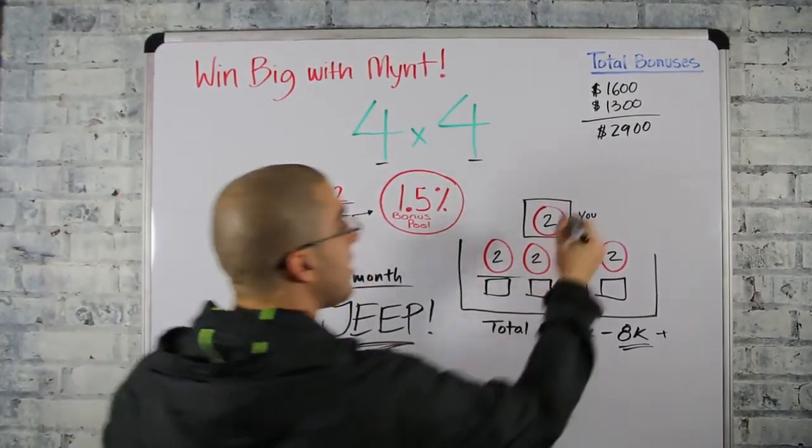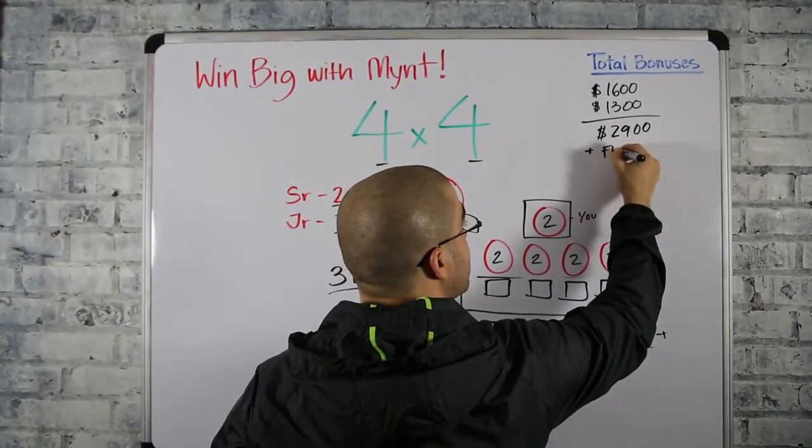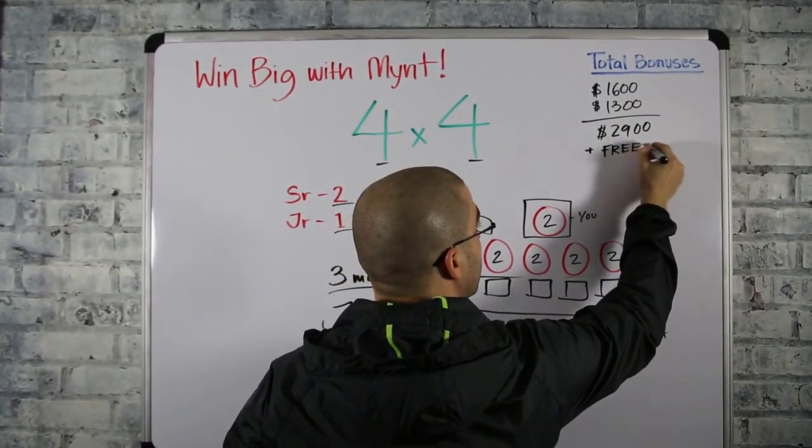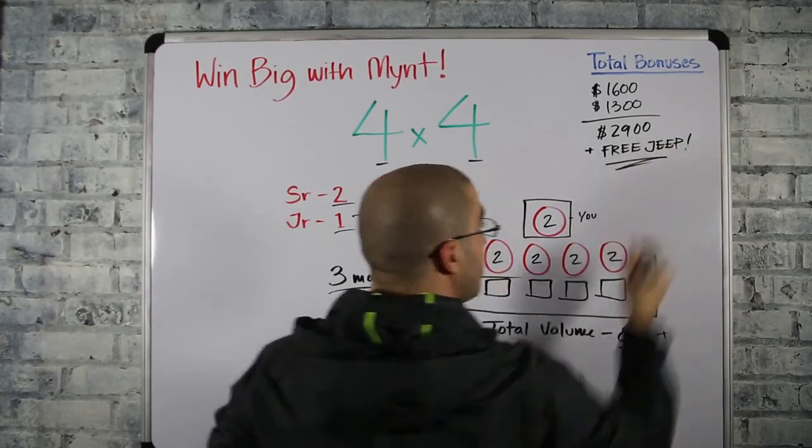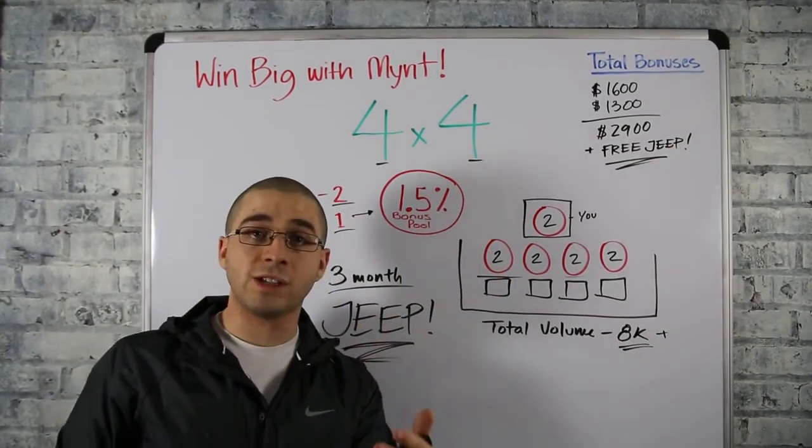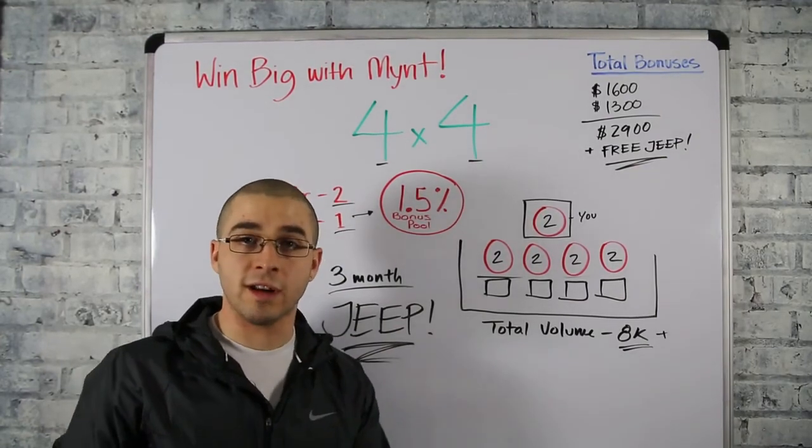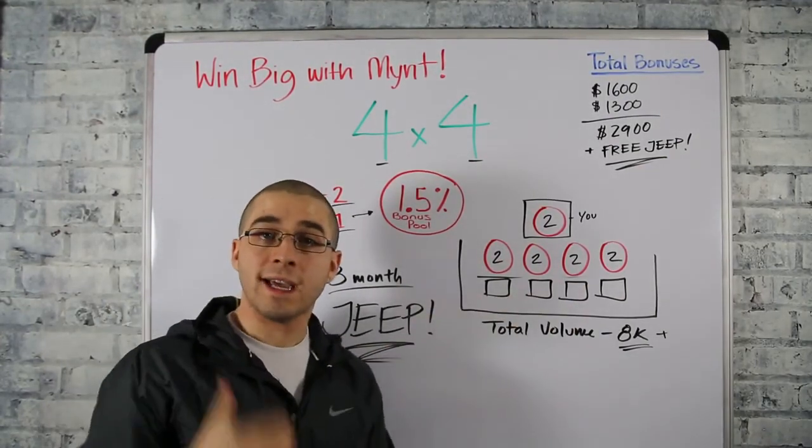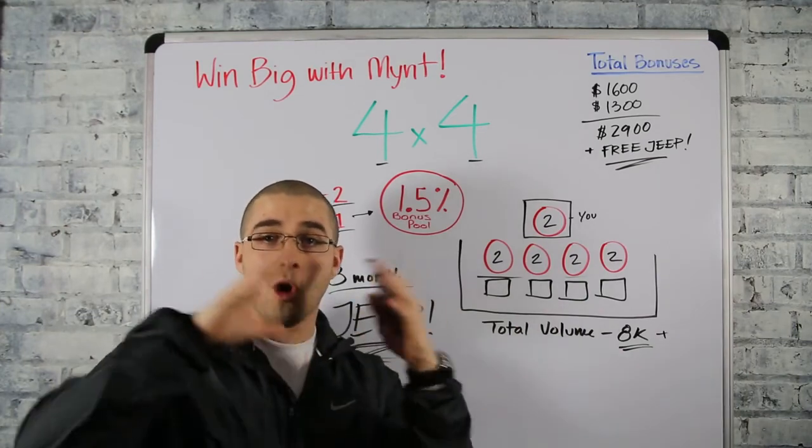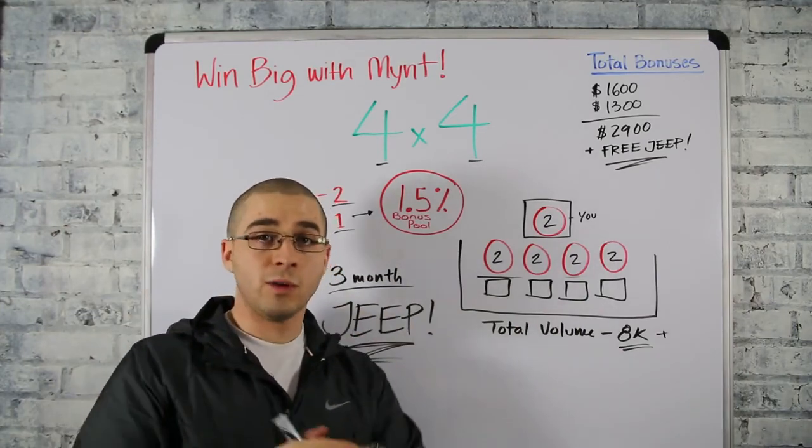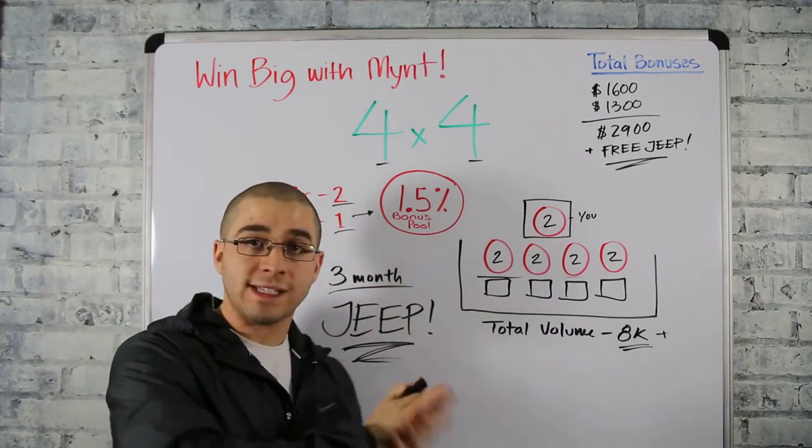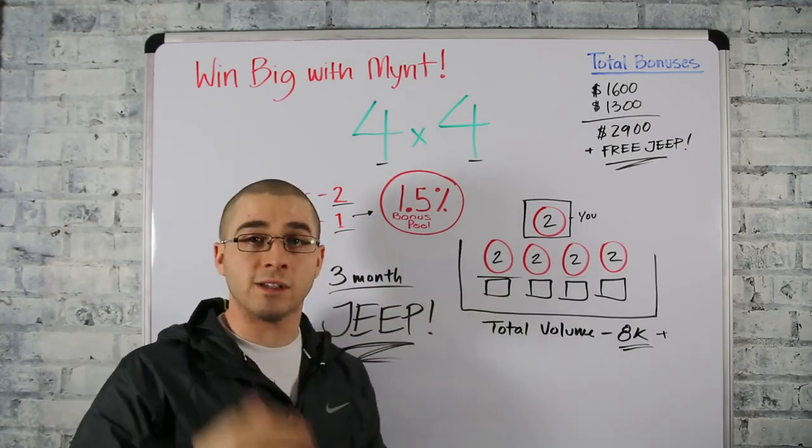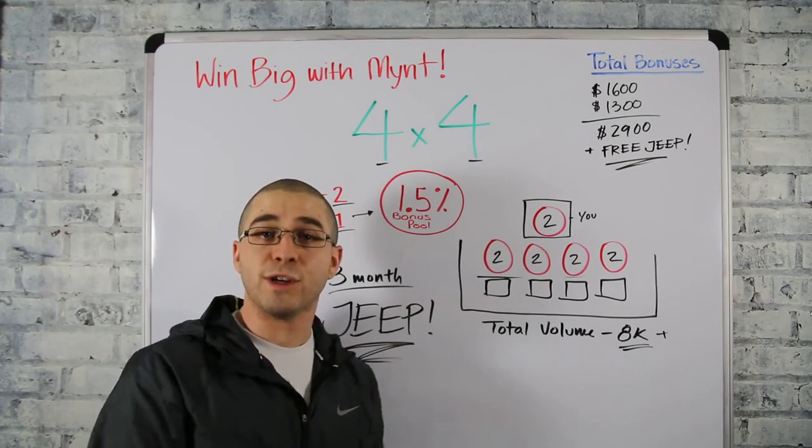So essentially you made twenty nine hundred dollars plus you have a free jeep, and that's how you get started with Mint. That's how you get started off to a fast start and you help your friends get started. Now what it's about is helping your friends get in that free jeep so we can have a whole bunch of jeeps riding around whatever town you're from, whatever state you're from. We want jeeps on the street that say Mint, get the word out there because there's a lot of money to be made and there's free jeeps to be earned.